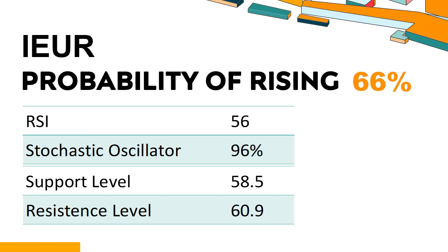Is IEUR trading above or below its moving averages? Technical Signals and Analysis: IEUR's 14-Day Relative Strength Index (RSI) value was 56. When the RSI is between 50 and 70, it generally indicates that the stock is moderately bullish, meaning the security's price has been rising but has not yet reached overbought levels, usually considered an RSI reading of 75 or higher. The current stochastic oscillator of IEUR is 96%. When the stochastic oscillator rises above the 80 level, it is usually considered overbought.